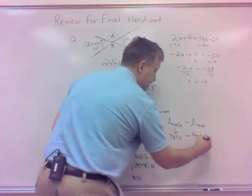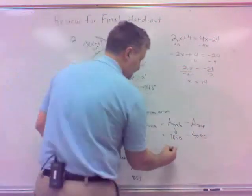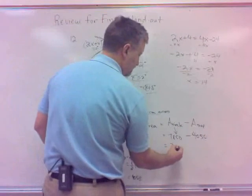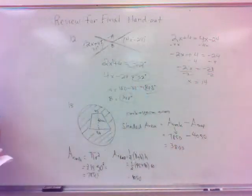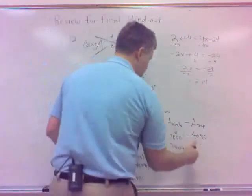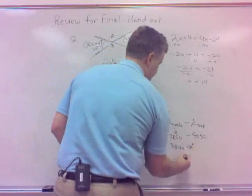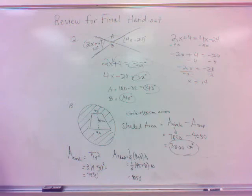So, that's what I would subtract from the circle. So, that would give me, what, 3800? And, might as well mention the units. What are units for area always? Square units. So, this would be centimeters squared. Okay. And, so, last but not least, number 14.